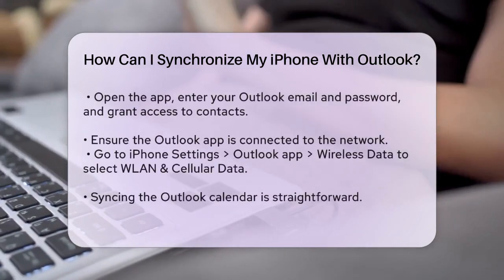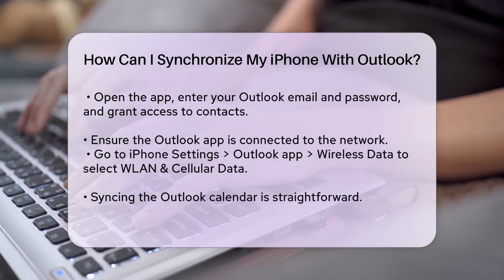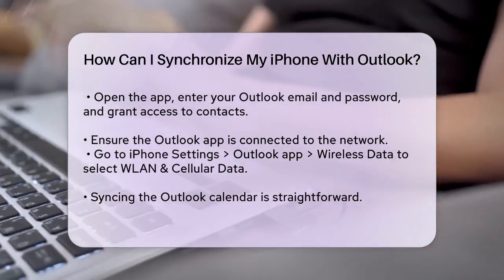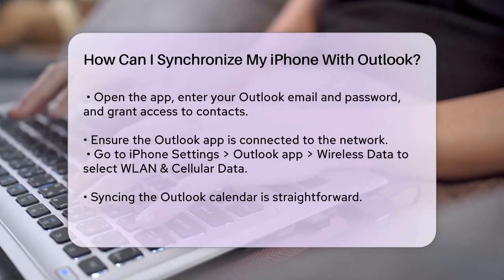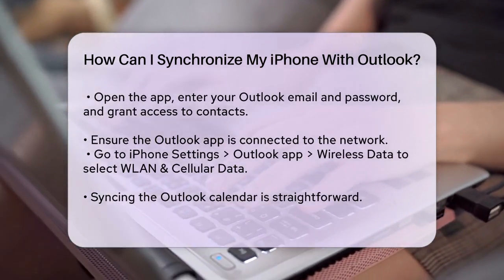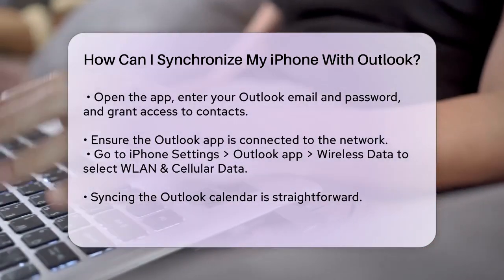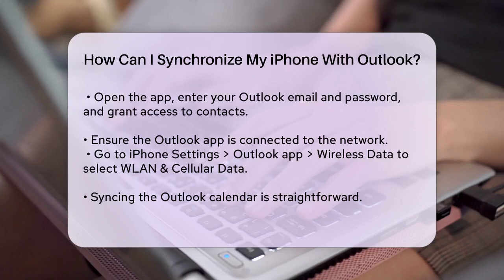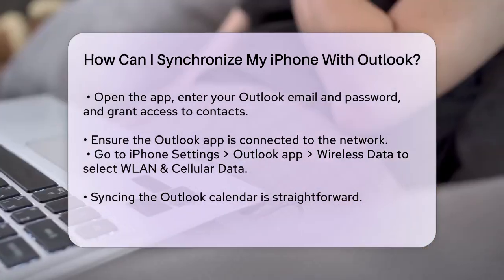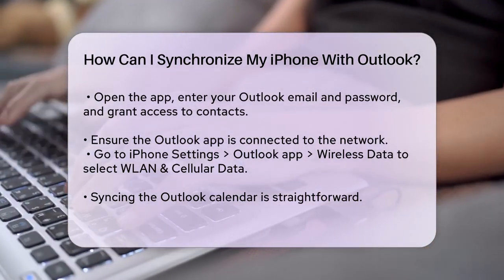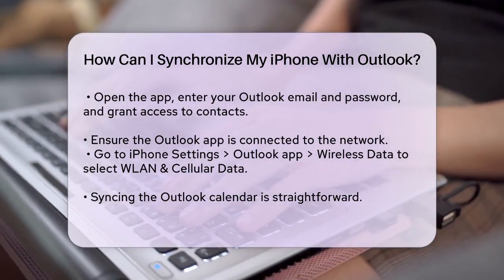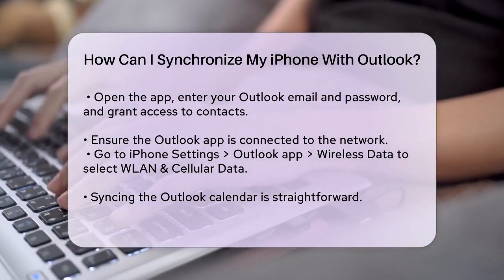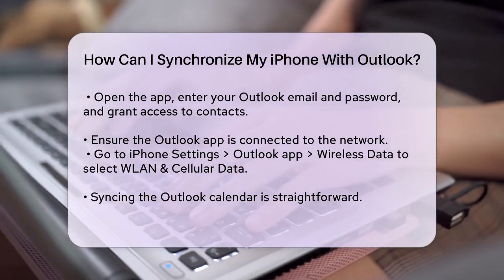Now let's talk about syncing your Outlook calendar with your iPhone — this is equally straightforward. You can either use the iOS Outlook app or set it up through your iPhone Settings. To sync your calendar using the Outlook app, download and install the app as mentioned earlier. Once you've logged in with your Outlook credentials, the app will sync your calendar automatically. You can check this by going into the app and viewing your calendar events under the Calendar section.